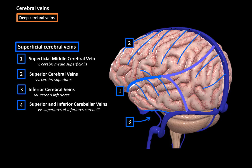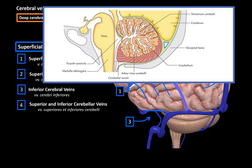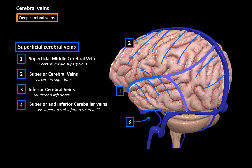We also have the superior and inferior cerebellar veins, also called the infratentorial veins because they're located below the tentorium cerebelli. They drain blood from the cerebellum and flow into the closest sinuses: the superior and inferior petrosal sinuses, the sigmoid sinus, and the transverse sinus.